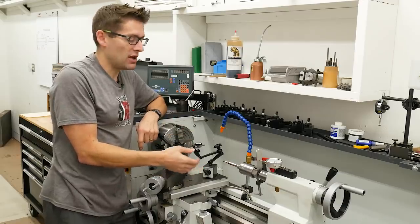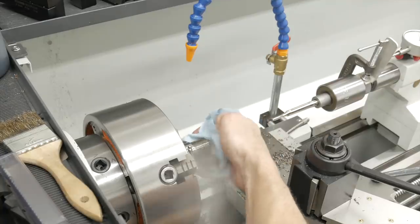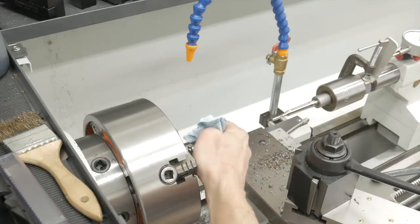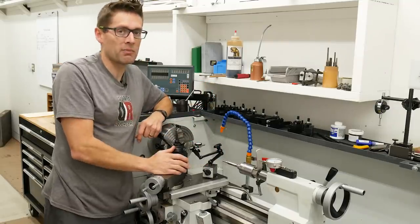Between each plunge, I'm wiping the chips off of the reamer and I'm blowing out the bore. Making sure that all the chips are off of both and reapplying the lube and then going for another plunge.